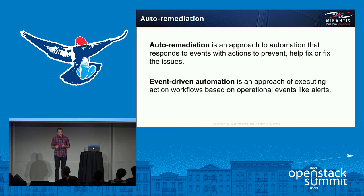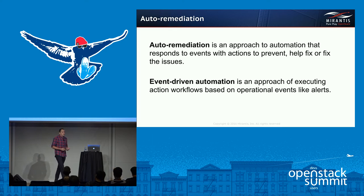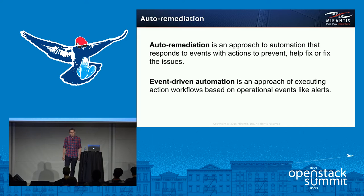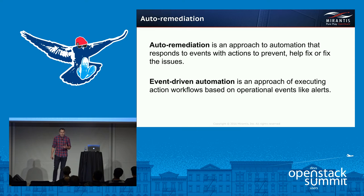What is auto-remediation? Auto-remediation is an approach to automation that responds to events with actions to prevent, help fix, or fix issues. The easiest example is when one of the services fills up the disk space with logs — why wait or wake up engineers to fix that if a simple script can wipe the logs and let the engineer know in the morning what needs to be fixed? Furthermore, event-driven automation is an approach of executing action workflows based on operational events like alerts. Zabbix triggers a low disk space alert and based on that trigger, an action runs the script to wipe the logs.